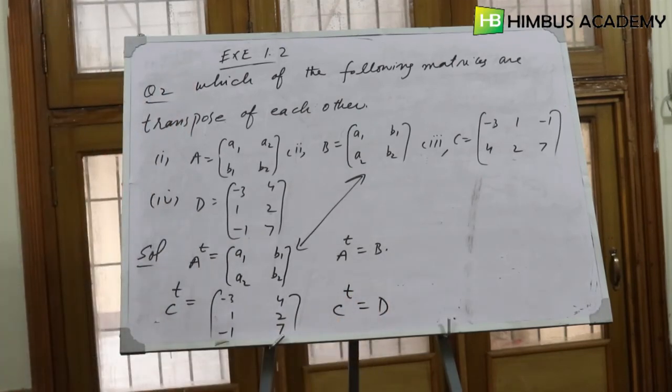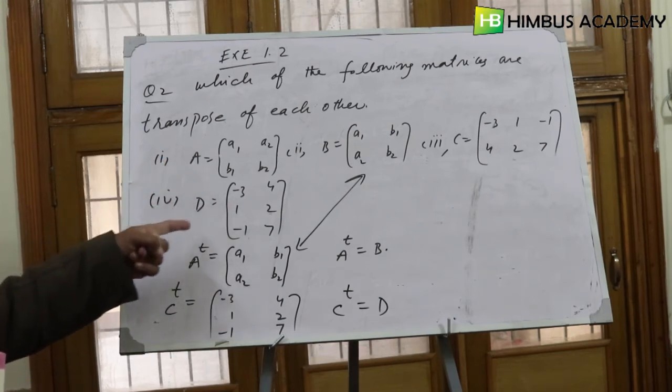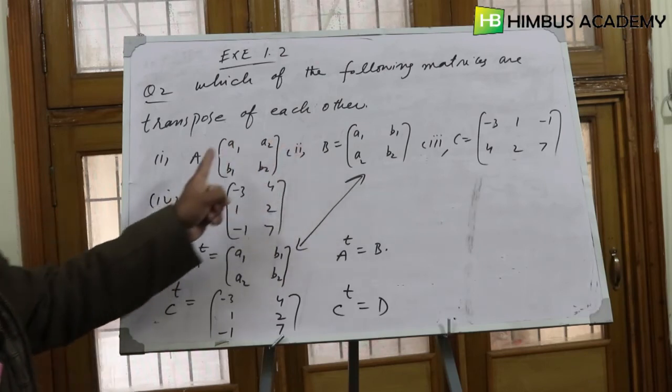So the question asks which of the following matrices are transpose of each other. So we will answer: B is the transpose of A.